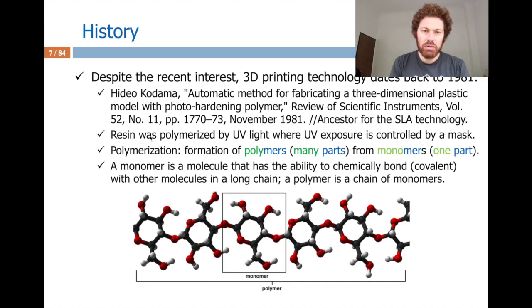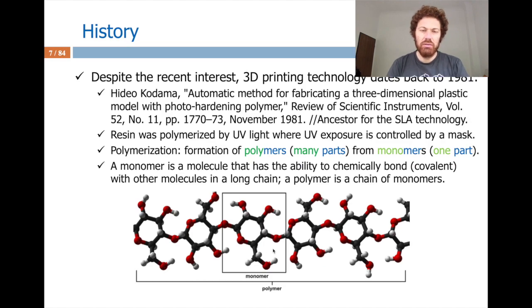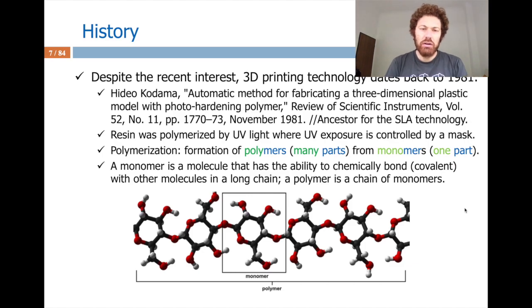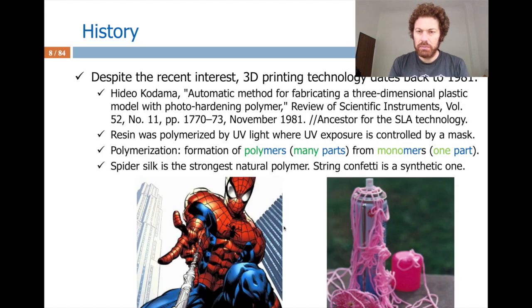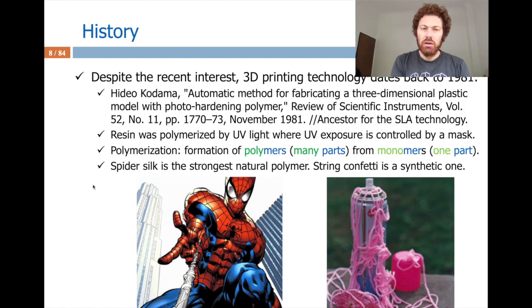Polymerization is the formation of polymers from monomers. A monomer is a molecule that has the ability to bond with other molecules to create a long chain, so a polymer is basically a chain of monomers. In nature, spider silk is known as the strongest natural polymer. We also have synthetic polymers like confetti used in birthday parties.